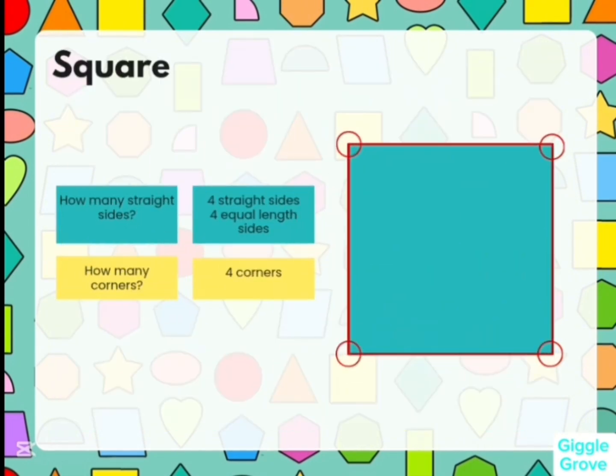Let's talk about the square. How many straight sides? There are four straight sides and four equivalent sides. How many corners are there? There are four corners.